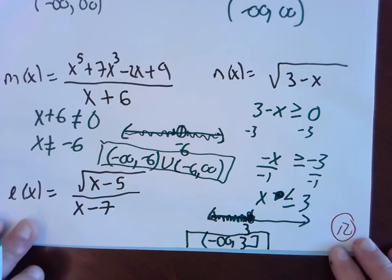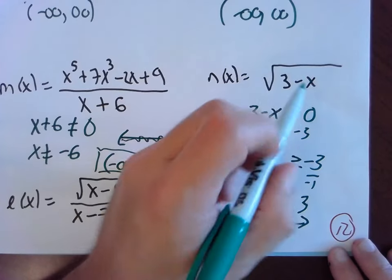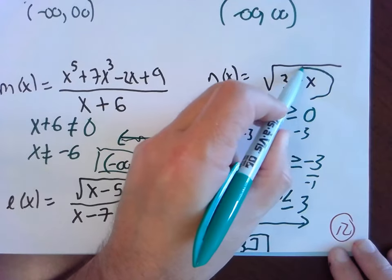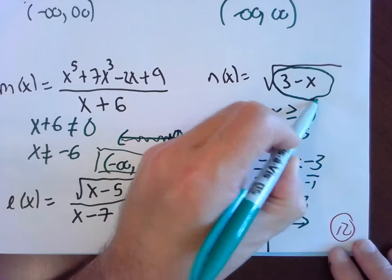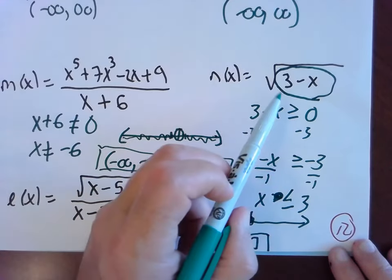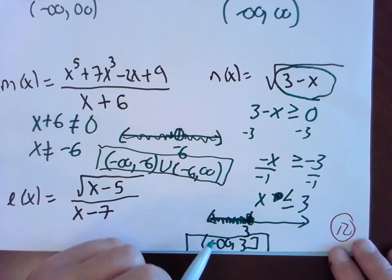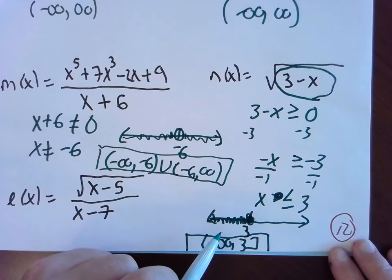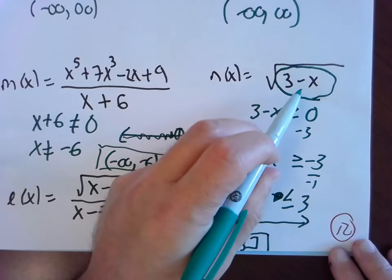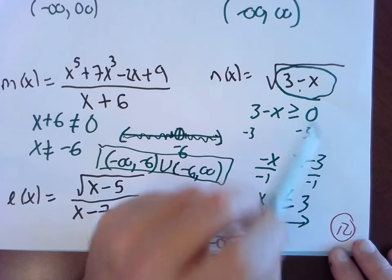Wait — you might be thinking x can't be negative. No — I said the inside, 3 - x, can't be negative. X can be whatever it wants as long as 3 - x stays non-negative. If you plug in negative 10: 3 - (-10) = 13, which is positive. We're fine.